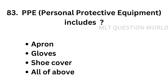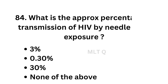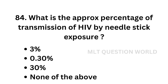Question number 83. PPE or Personal Protective Equipment includes: Option A: Apron, Option B: Gloves, Option C: Shoe cover, Option D: All of the above. The correct answer is Option D — All of the above. Apron, gloves, and shoe cover are all included in Personal Protective Equipment.